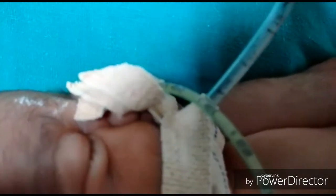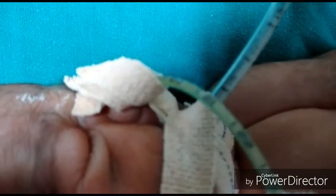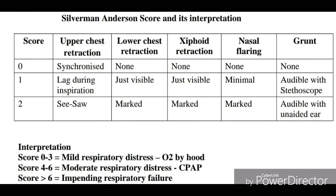In the Silverman-Anderson scoring system for upper chest retraction: if respiration is synchronized, score is 0; if lag during inspiration is present, score is 1; if seesaw respiration, score is 2. For lower chest retraction: if no retraction, score is 0; if just visible lower chest retraction, score is 1; if marked retraction, score is 2.